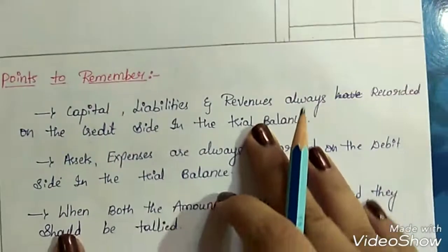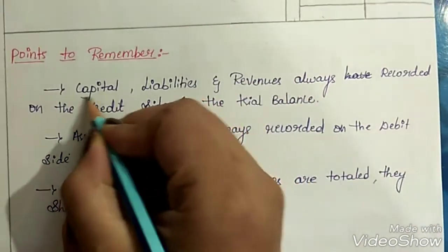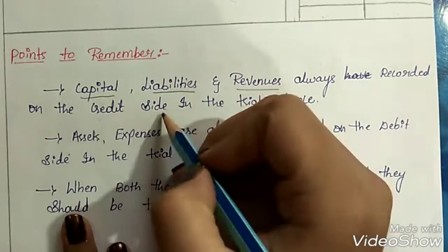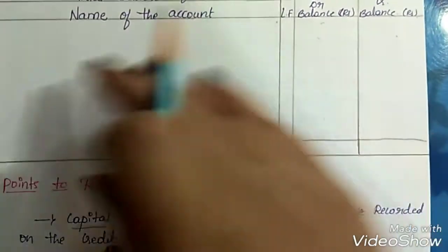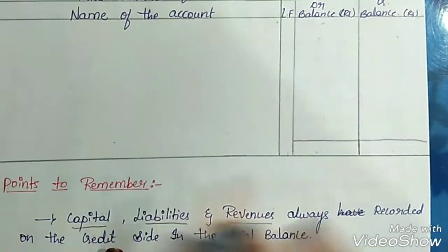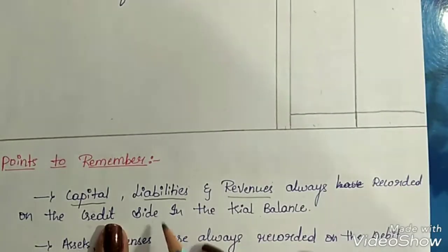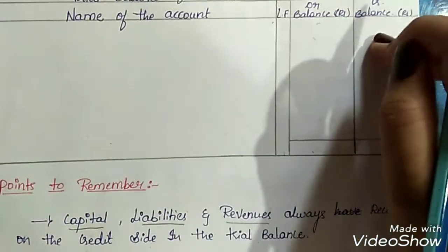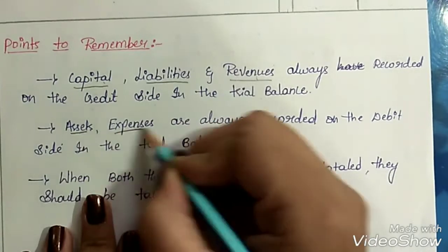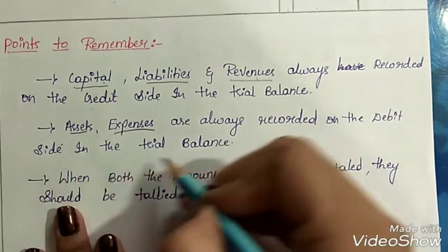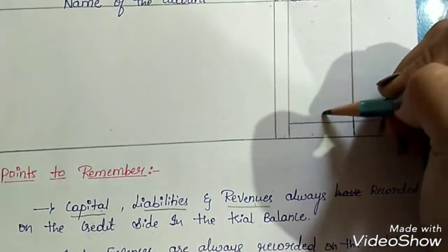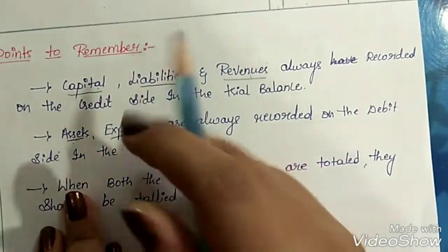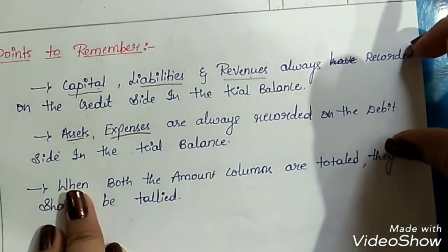For preparing trial balance, there are certain points to remember. Capital, liabilities, and revenues are always recorded on the credit side in the trial balance. So if in a question there are any capital, liabilities, or revenues, the name of the account should be written in the particulars column and the amount should be recorded on the credit side. Next, assets and expenses are always recorded on the debit side in the trial balance. The name of the account goes in the particulars column, but the amount needs to be recorded on the debit side. Remember both of these — they are very important.